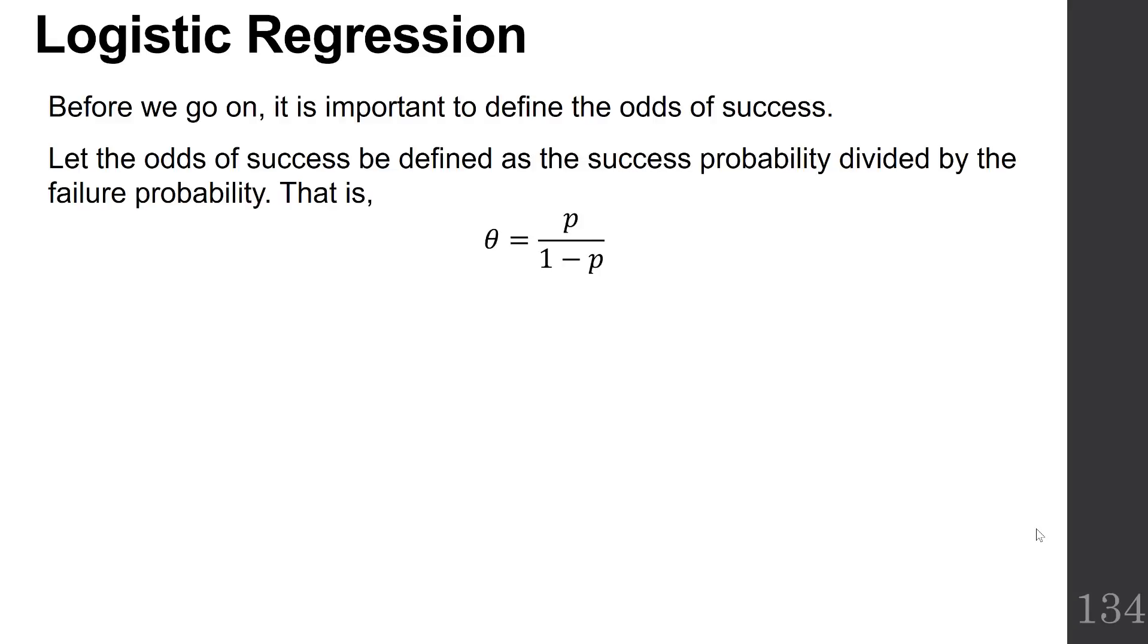Let the odds of success be defined as the success probability of whatever outcome you're interested in divided by the failure probability, that is, theta equals p over 1 minus p.